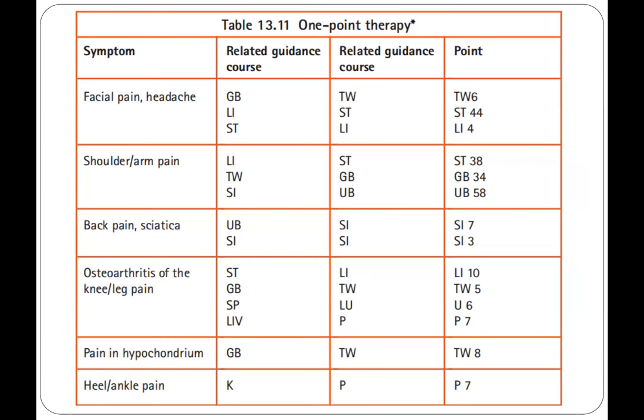For facial pain and headache, the related guidance courses are the gallbladder, large intestine, and stomach, with points Triple Warmer 6, Stomach 44, and LI4. For shoulder and arm pain, the related courses are large intestine, triple warmer, small intestine, stomach, gallbladder, and urinary bladder. The points are Stomach 38, GB34, and UB58.